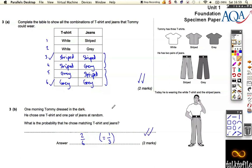Just picking the option that matching t-shirt and jeans means that it's striped and striped and grey and grey, so there's two options out of the six total options. And that's it.